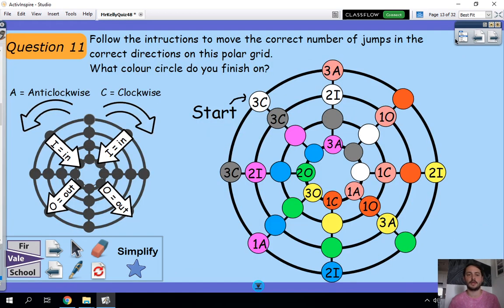Question eleven. It says follow the instructions to move the correct number of jumps in the correct directions on this polar grid. It's called a polar grid because at the middle is like the pole. And you've got all of the things coming out as sort of like directions from that central bit. The question says what colour circle do you finish on? So here's some instructions. When there is a letter C, it stands for going clockwise in the same way that the clock would move. When there is a letter A, it means you're going anticlockwise. If it's I, you're going inwards towards the centre. And if there's an O, you're going outwards towards the outside. So I'm going to just give you a bit of a hint for this first one. You start here with three C. This means move three positions clockwise. So you're going to go one, two, three. And then two I means you're going to be moving two inwards. One, two. You're going to keep doing that until you land on a colour with no instruction. And that's where you finish. So you need to tell me what you finish on there.